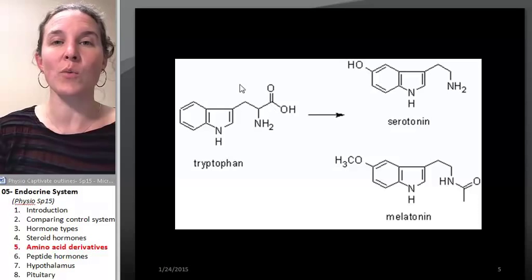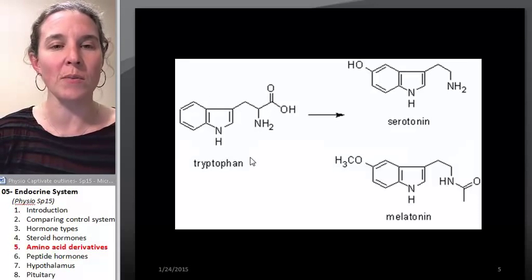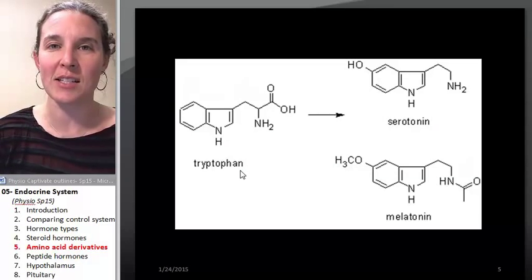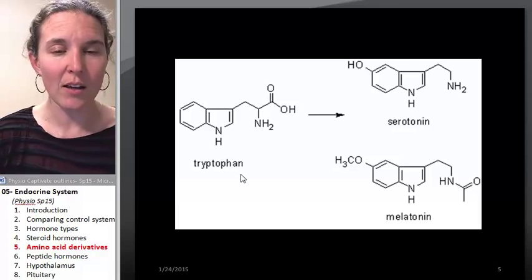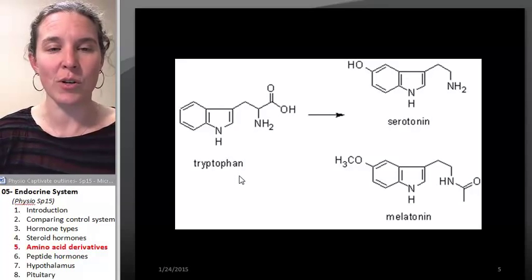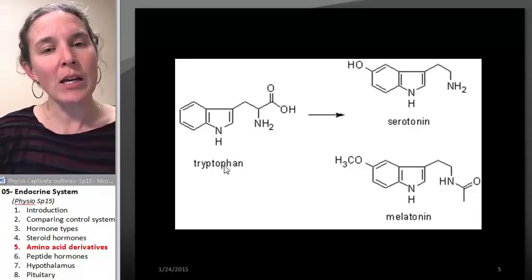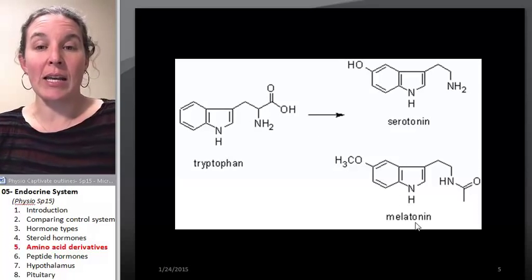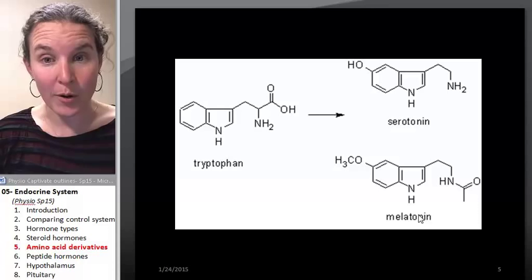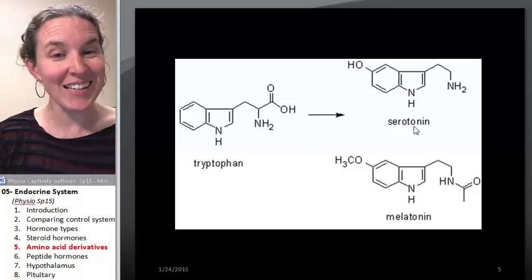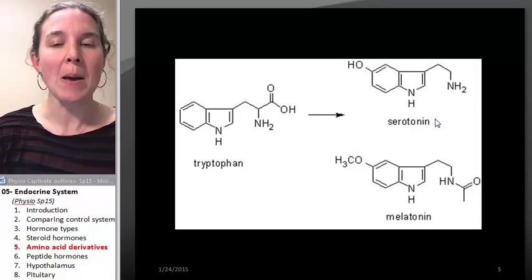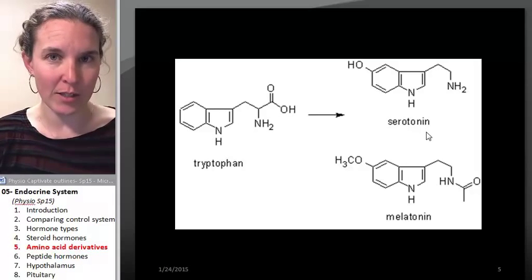Tryptophan is the one that erroneously, we've all been told, makes us fall asleep at Thanksgiving after we eat turkey. Apparently, this is not a true story. But tryptophan, if it is modified, can be used to produce melatonin, which is a hormone. Now, serotonin is also produced from tryptophan, but serotonin is a neurotransmitter.